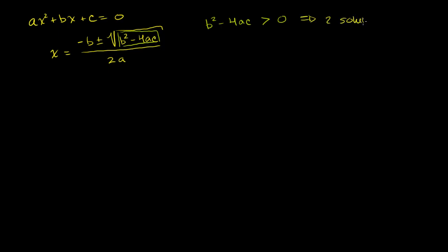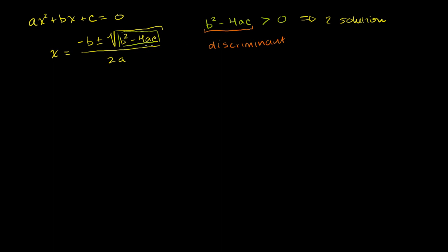I just used the word 'discriminant,' and all that is referring to is this part of the quadratic formula — b² - 4ac. This right here is the discriminant of the quadratic equation. You just have to remember it's the part that's under the radical sign of the quadratic formula.